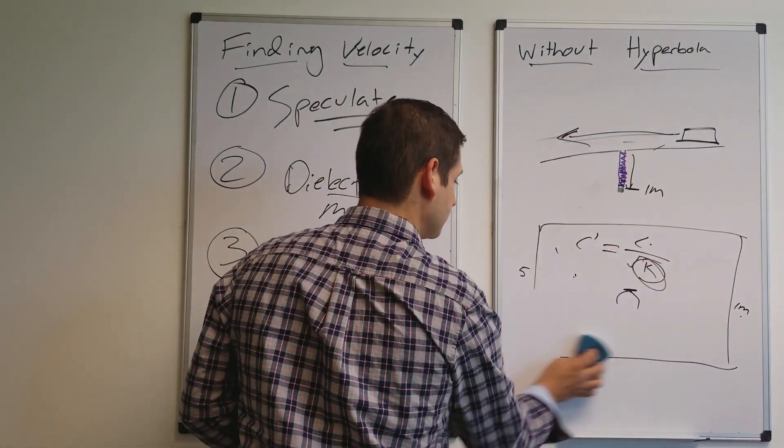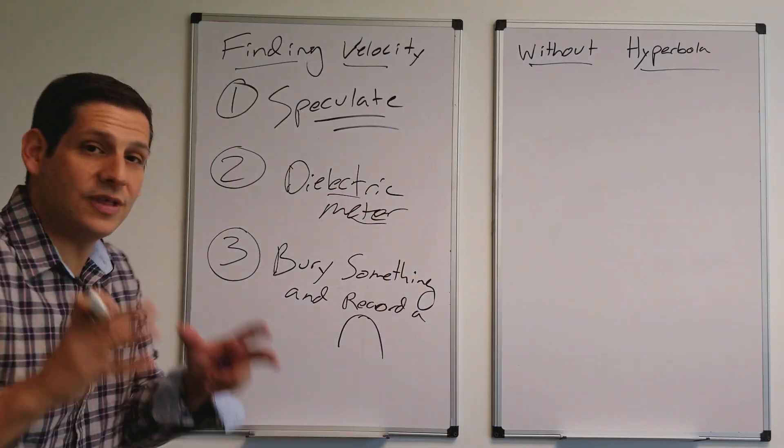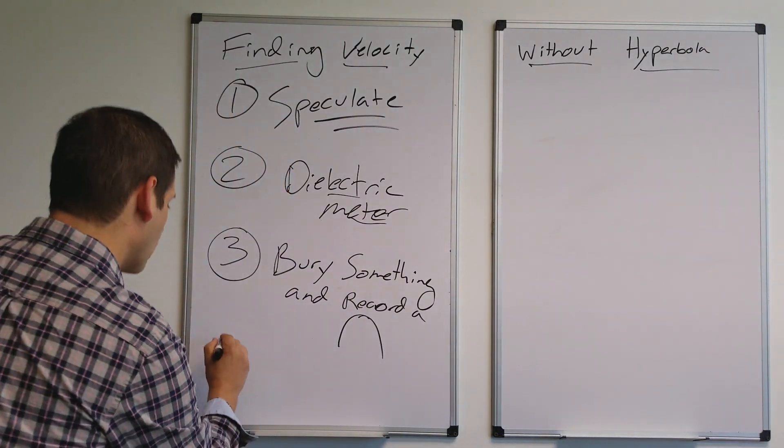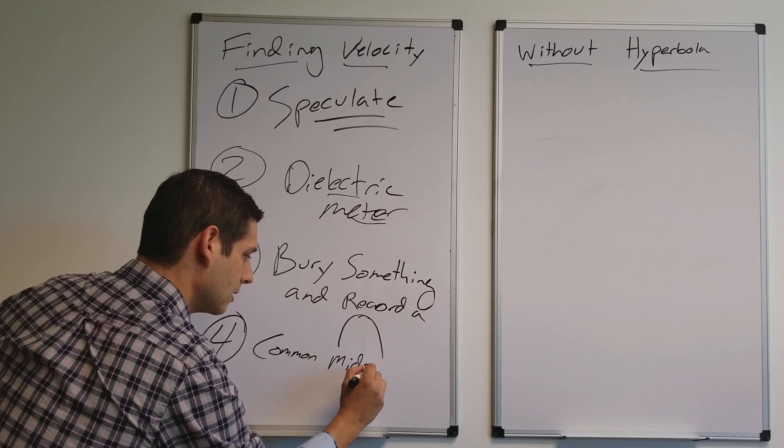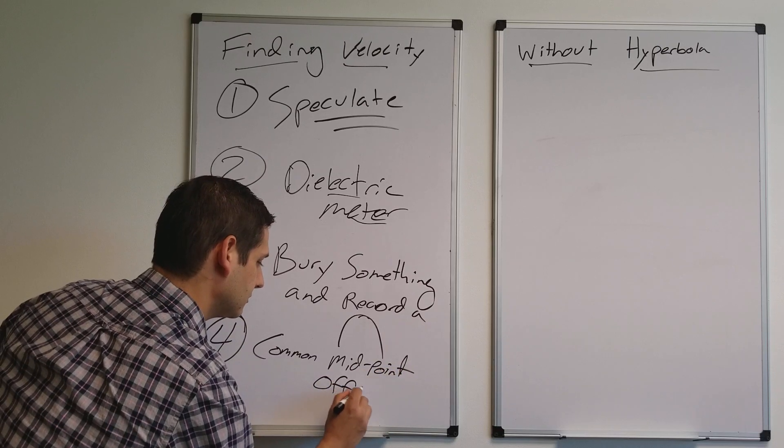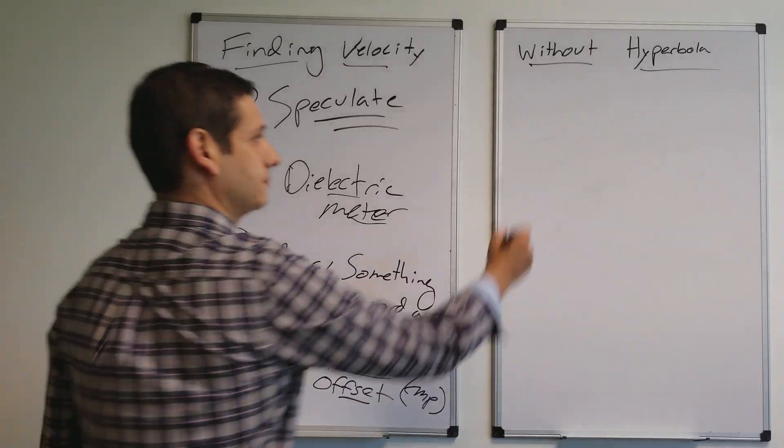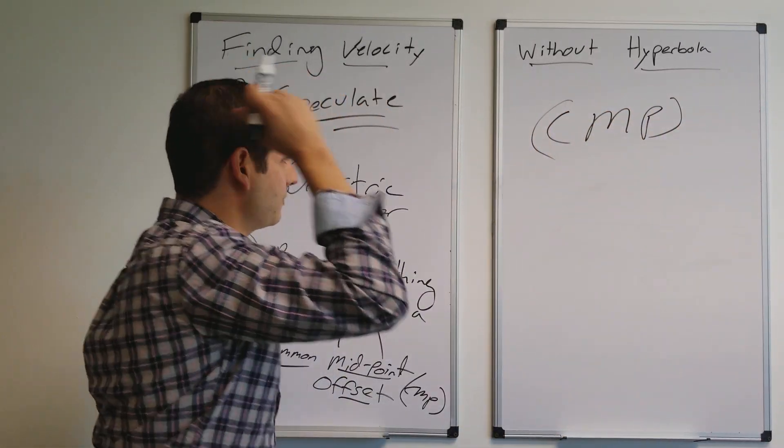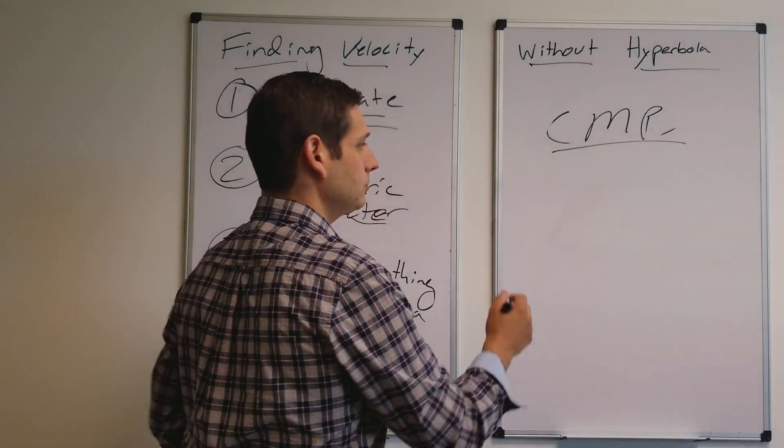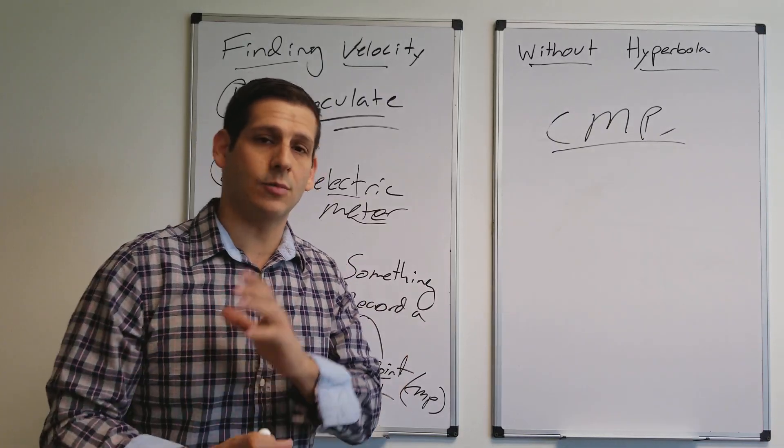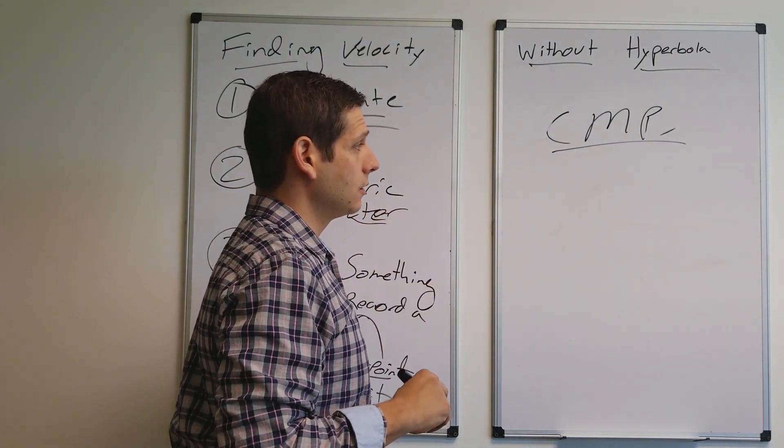The final way, so there I told you there was going to be four. So here's the final way to do it. Way number four, I'm giving you the ultra super value today. Number four is you can use a common midpoint offset, often referred to as a CMP. How does the CMP work? A CMP works like this. You don't have any hyperbola, right? And you don't have a hyperbola because you don't have something that's reasonably round buried within the space that you're looking at.